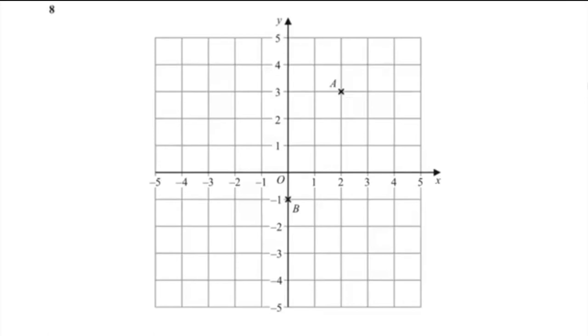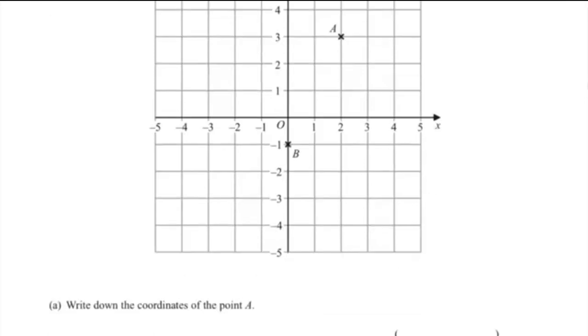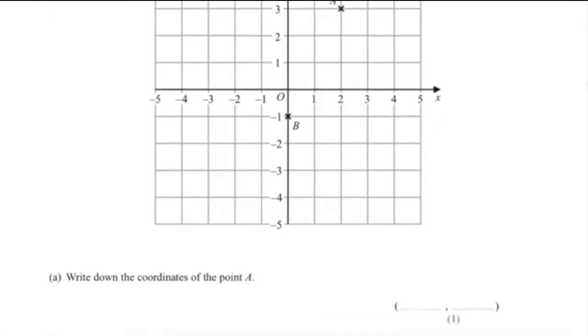Question 8A: write down the coordinates of point A. Point A is at (2, 3), so that's our first answer.